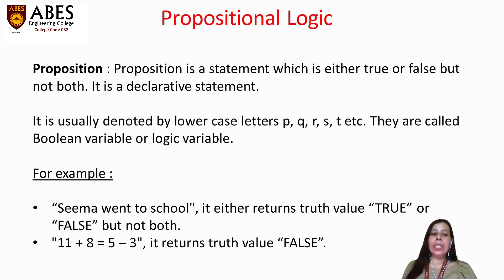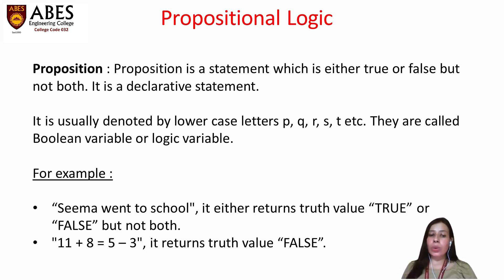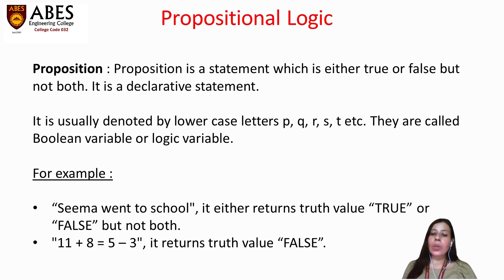For example, 11 plus 8 is equal to 5 minus 3. Now we know 11 plus 8 is equal to 19 and 5 minus 3 is equal to 2. Since 19 is not equal to 2, this proposition will return the value false.